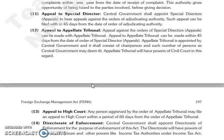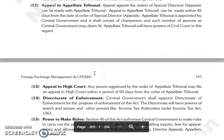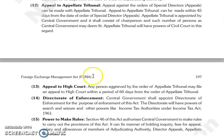The next is appeal to Appellate Tribunal. जो appeal है की जा सकती है against the orders of Special Director's appeal, वो की जा सकती है Appellate Tribunal को. Central government उसमें एक chairperson appoint करेगी और such number of persons जो central government को fit लगते हैं. Appellate Tribunal जो है उसके पास powers होगी civil courts की in this regard.